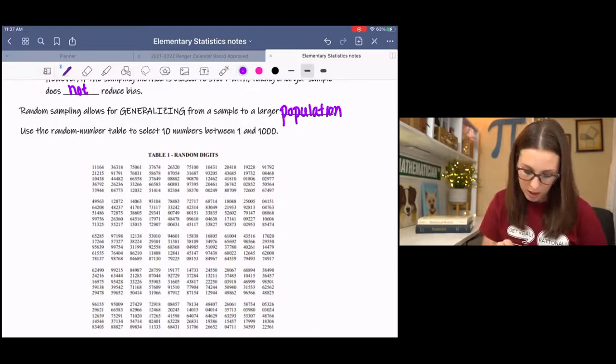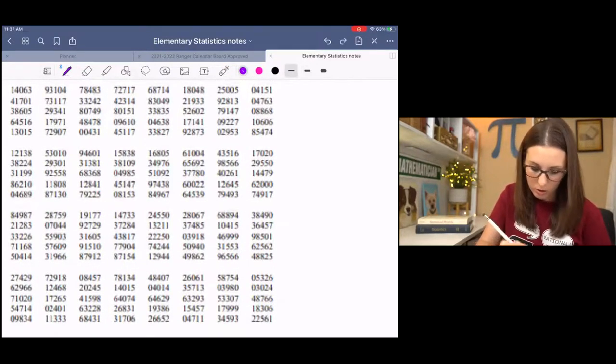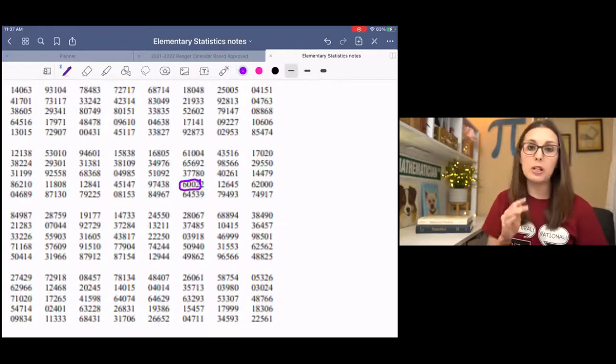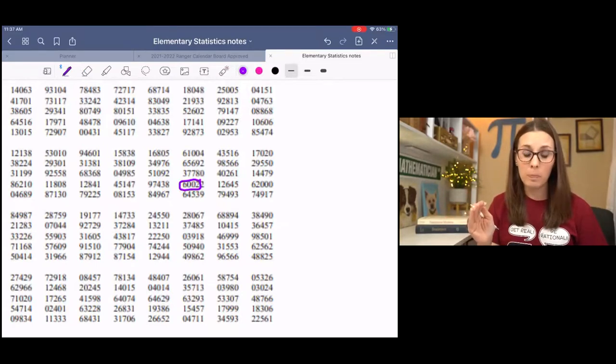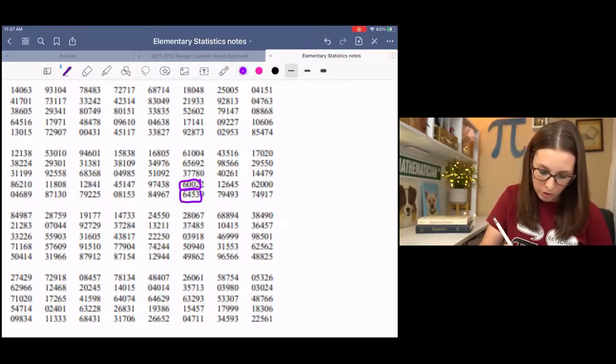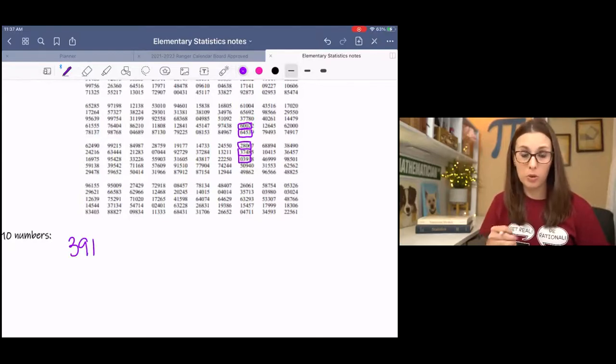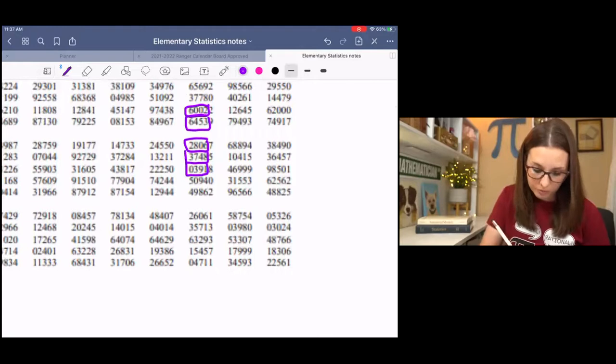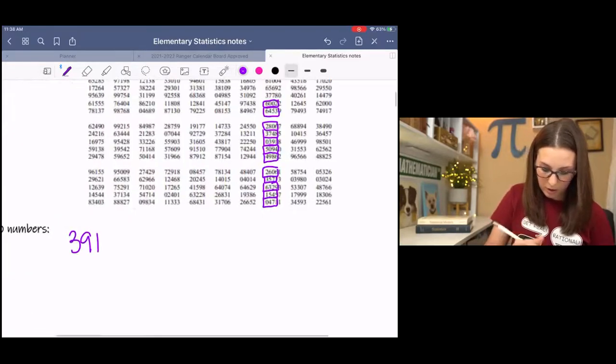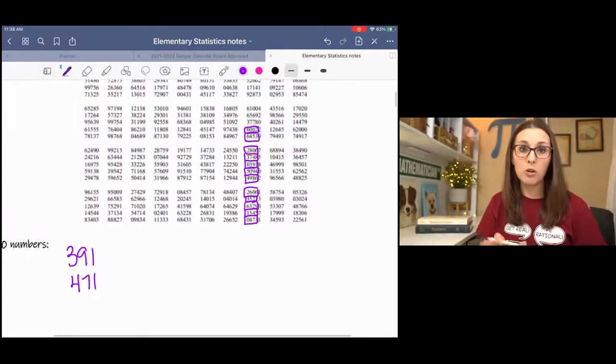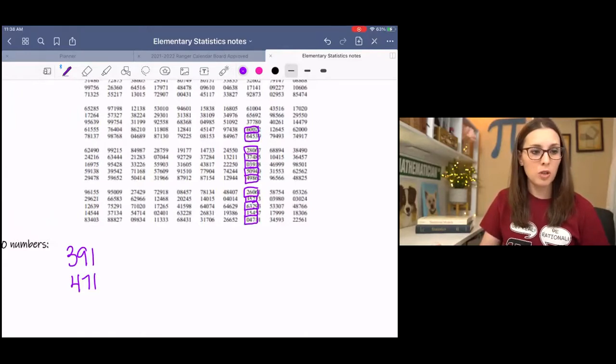And this is pretty involved. It takes a minute. I'm starting here. This is my starting point. It's 4-digits. 6,002 is above 1,000. So, I cannot use it in my sample. And then I'm going to work my way down, circling 4-digit numbers, until I find 10 numbers between 1 and 1,000. So, I found 1. And you're just going to repeat this process until you find 10. And it usually takes a while. So, I want to encourage you to pause it and try this on your own to get 10 numbers.